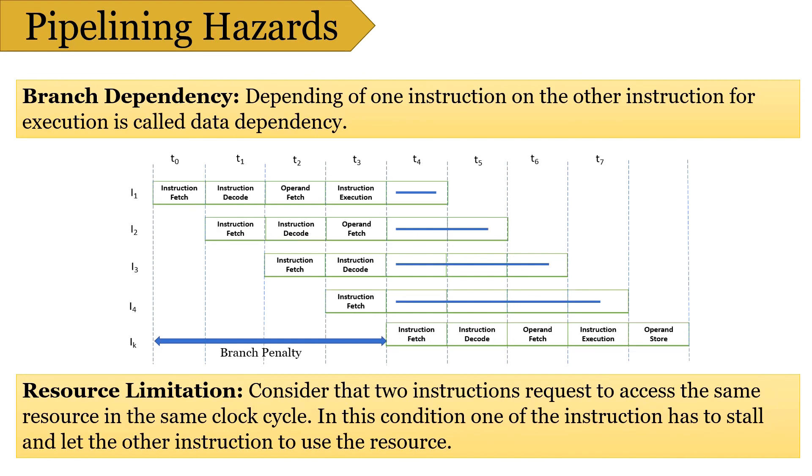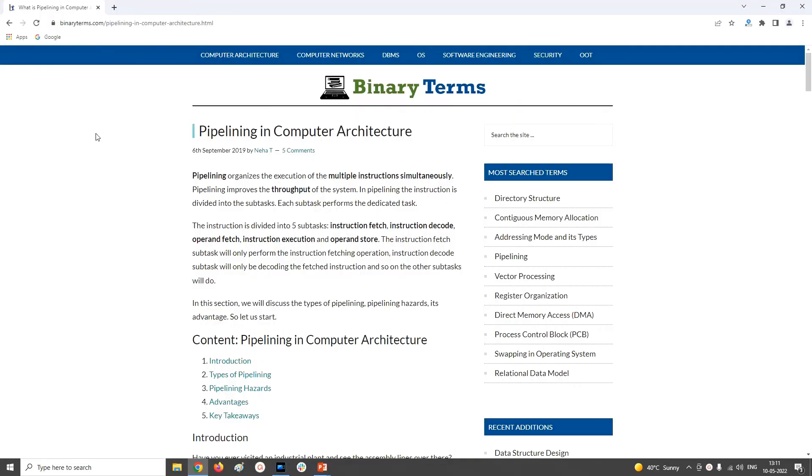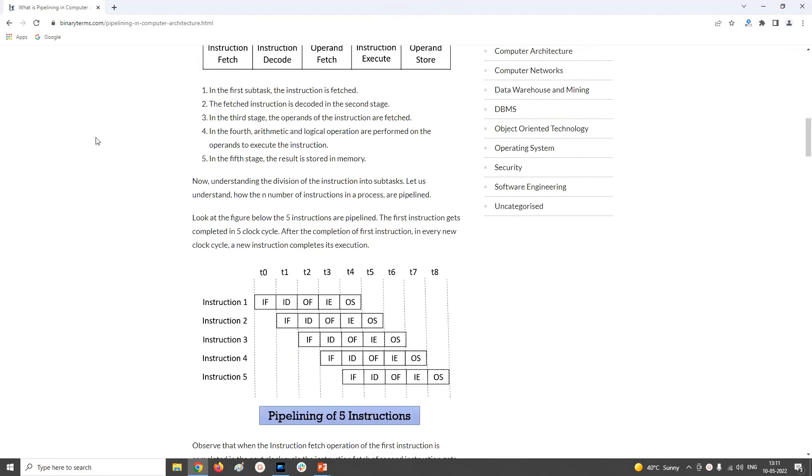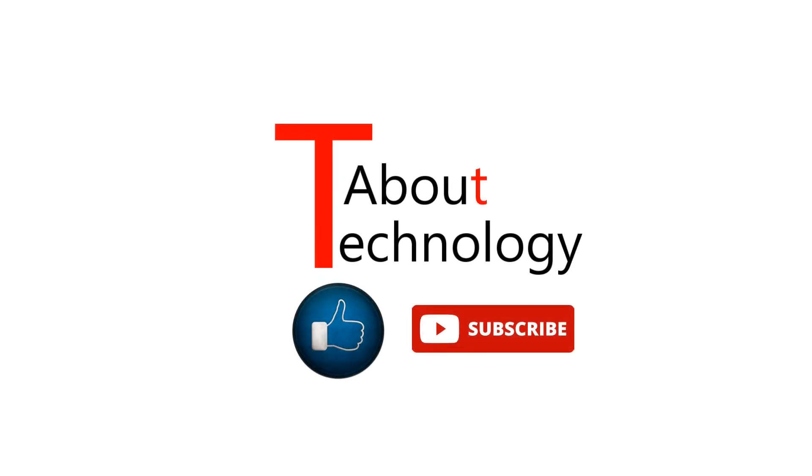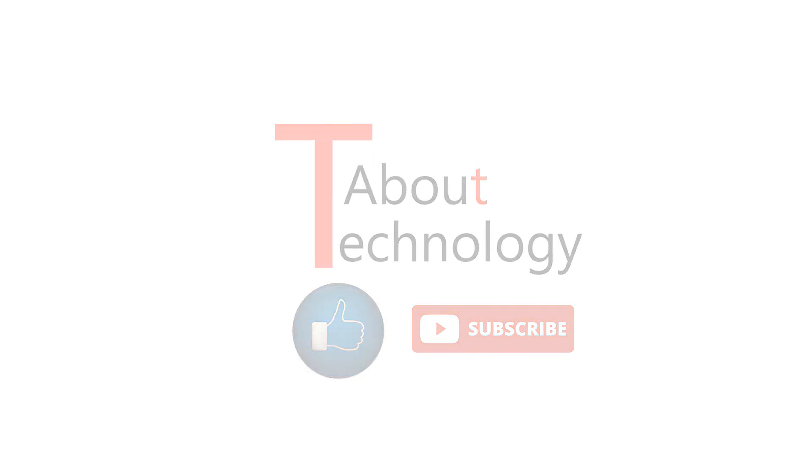So this is how pipelining improves the throughput of your system and makes it more efficient. For more details, you can refer our official website binaryterms.com. I had given URL for the same in the description below. Please like and share this video with your friends and family and don't forget to subscribe our YouTube channel About Technology. Keep checking the channel for further updates and put your comments and queries in the section below. We will be back again soon with our new video. Till then, take good care of yourself.